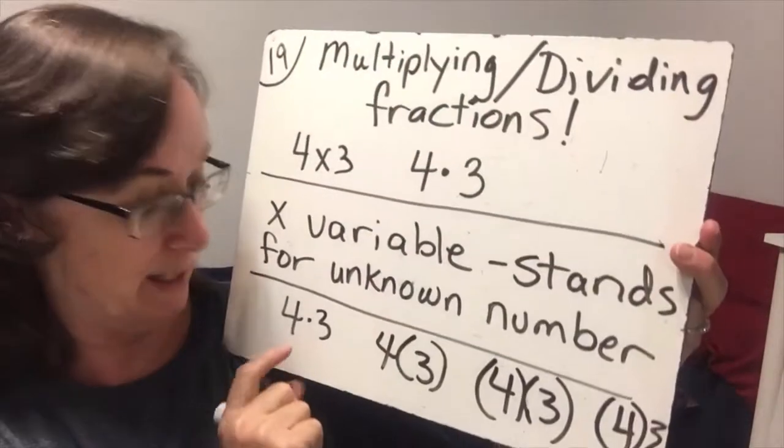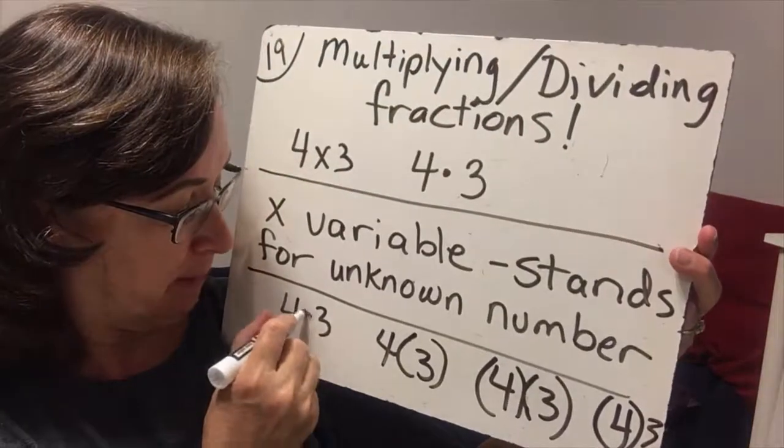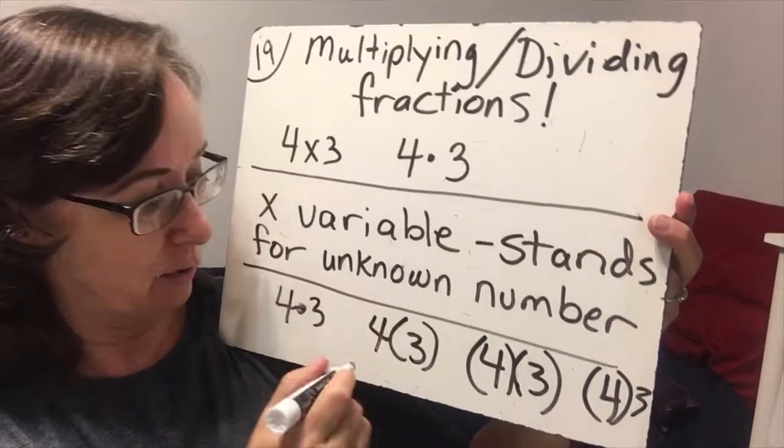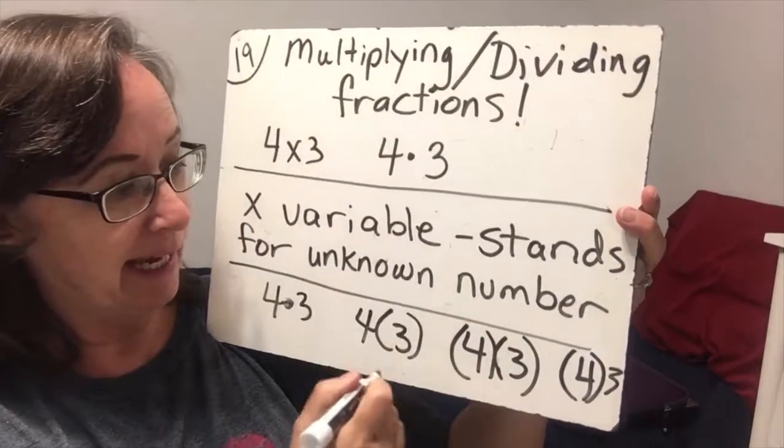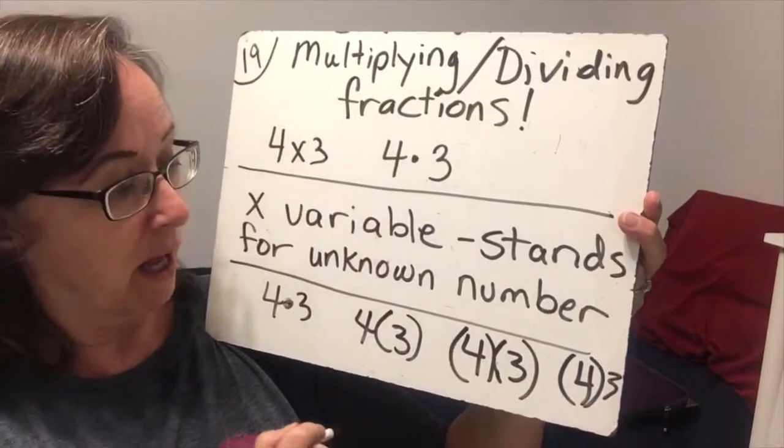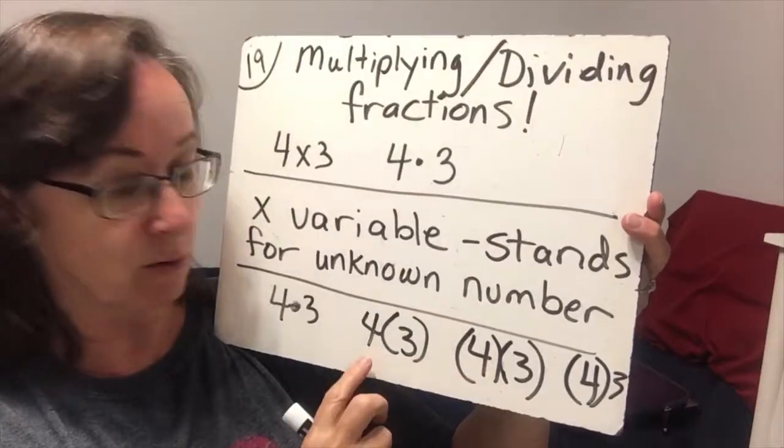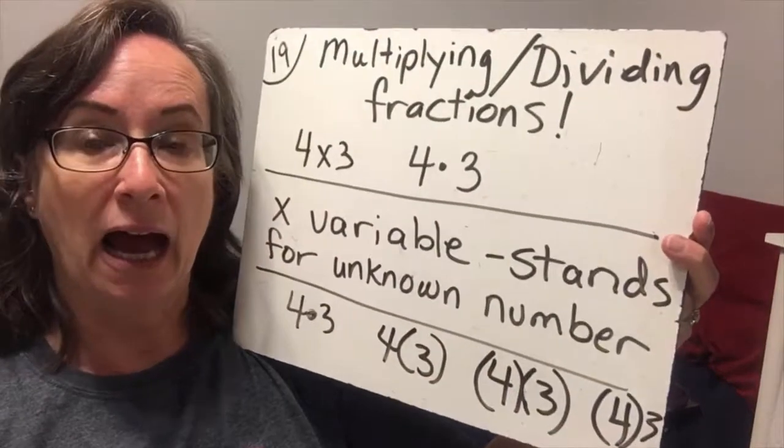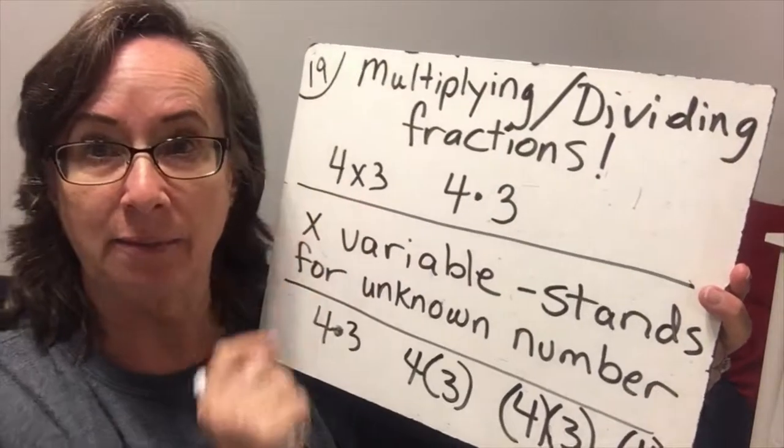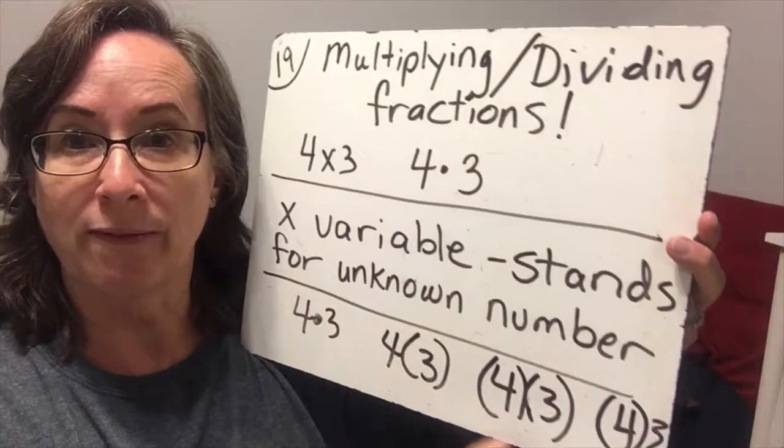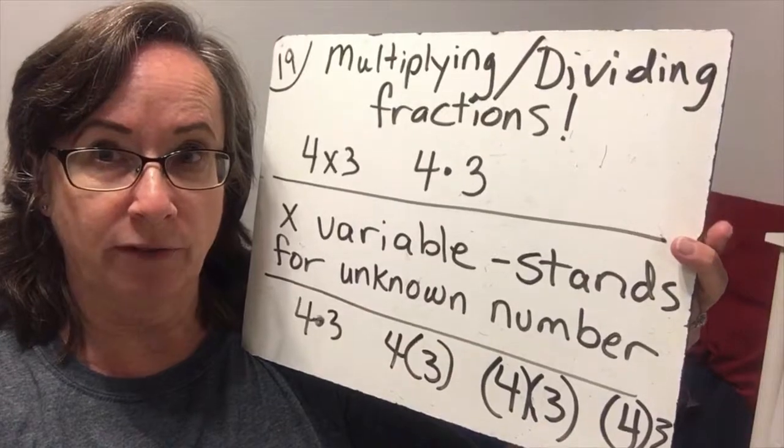So what we do is we keep the little dot symbol, and we use parentheses to indicate multiplication. Any of these works. You can have them both in parentheses or one or the other. But we will no longer regularly use the times sign.